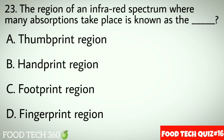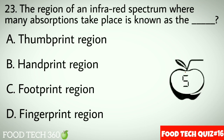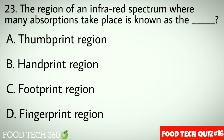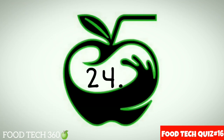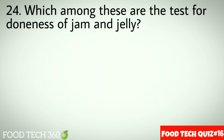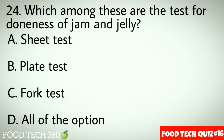Question No.23: The region of an infrared spectrum where many absorptions take place is known as the dash. Options A: Thumbprint region. B: Handprint region. C: Footprint region. D: Fingerprint region. Correct answer D: Fingerprint region.